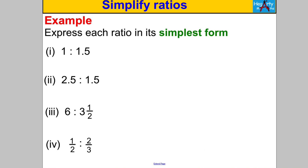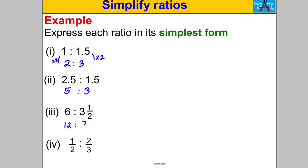Next, some slightly harder ones involving decimals. What's not in simplest form is that we have decimal or fraction numbers. For 1 to 1.5, you can double both sides to get the ratio 2 to 3 — both integers, HCF is 1, done. For 2.5 to 1.5, doubling gives 5 to 3, which is simplest form. The doubling trick also works for the third case: doubling gives 12 to 7.